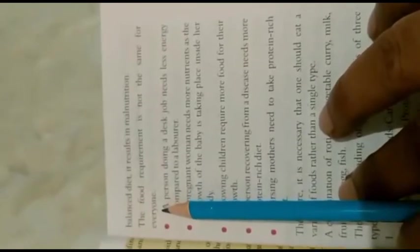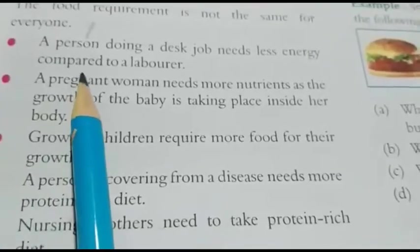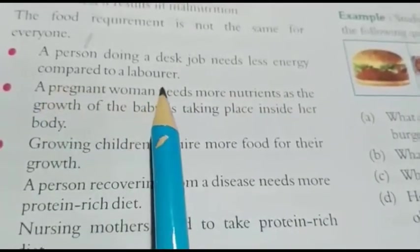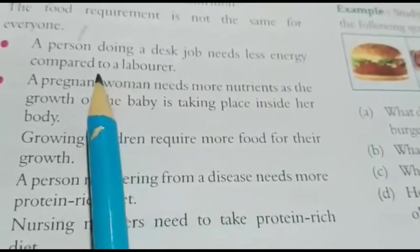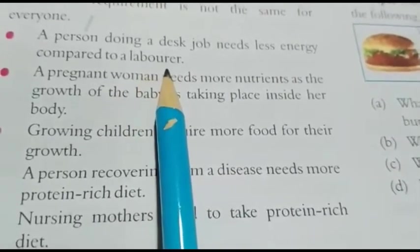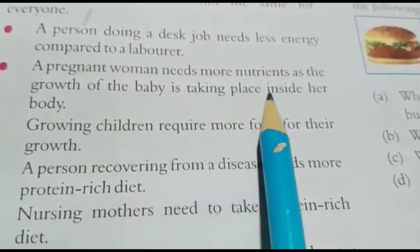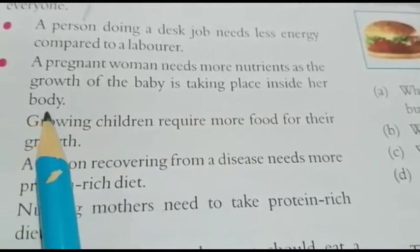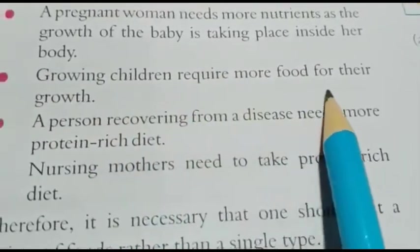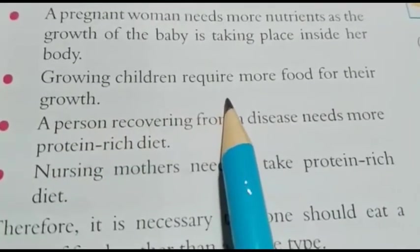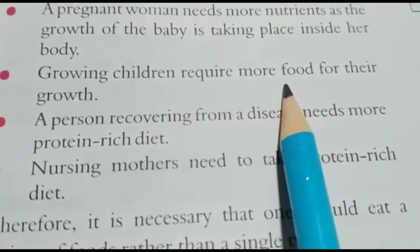The food required is not the same for everyone — sabhi ke liye ek jesi food ki requirement nahi hoti hai. A person doing a desk job needs less energy compared to a labour, because a labourer has to do hard physical work. A pregnant woman needs more nutrients as the growth of the baby is taking place inside her body. Growing children also require more food for their growth.